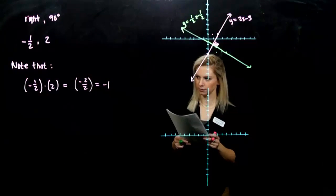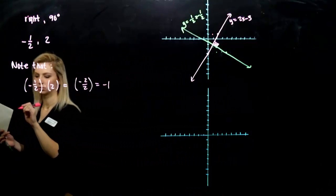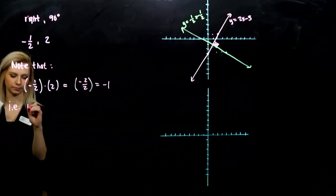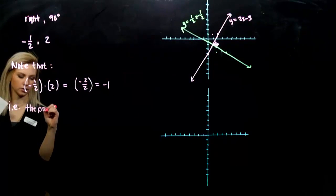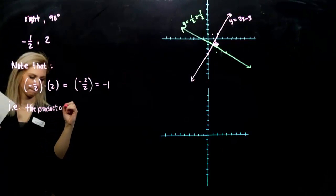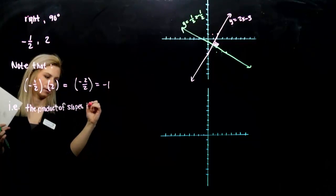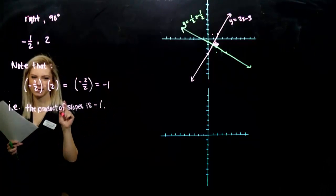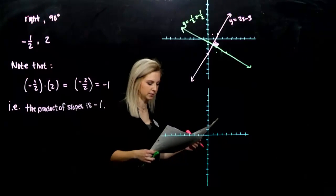So the product of the two slopes is negative 1. That's very important. We're going to use that.